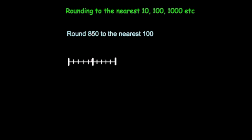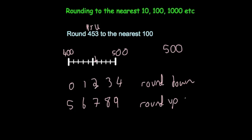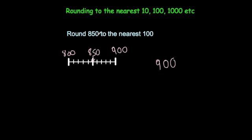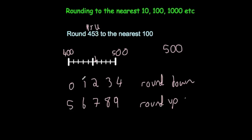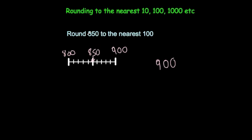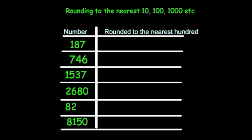Let's look at another one: 850. Here's 800, here's 900, and this time 850 is exactly in the middle. When it's exactly in the middle, the common practice is to round up, so it rounds up to 900. The number in the tens column is a 5, so you round up to 900.